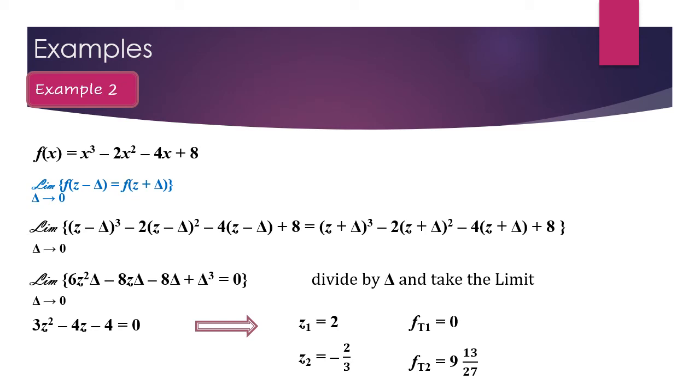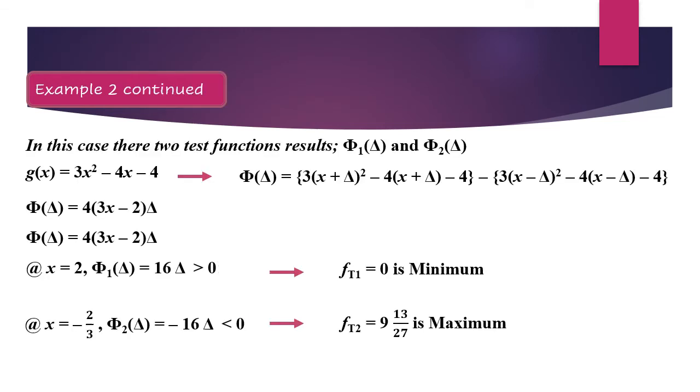then delta squared certainly will become zero, then I'm ending with this equation. And this equation now has got two solutions. One solution to x equals to 2, or z1 is equal to 2, in which it gives a value which is turning point, but we do not know yet if this is maximum or minimum. And the same idea here, z is equal to minus 2 over 3.